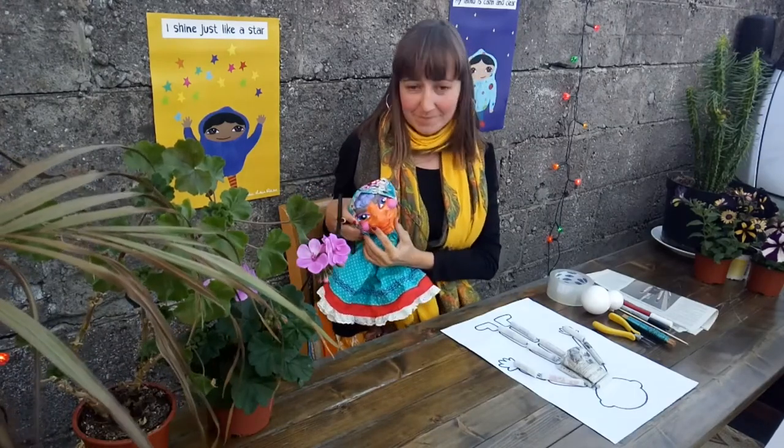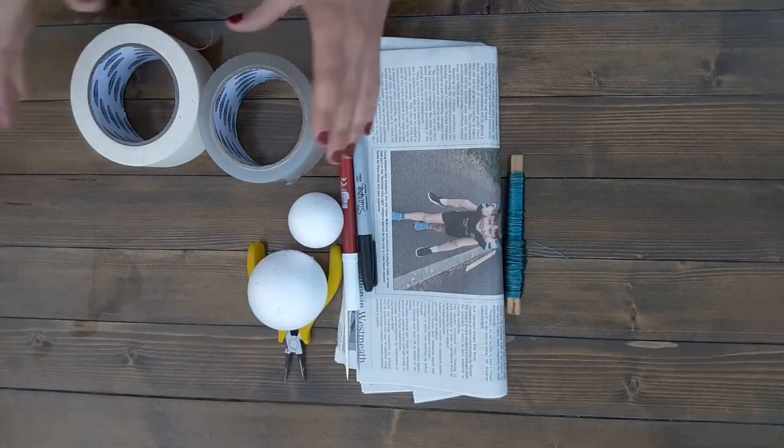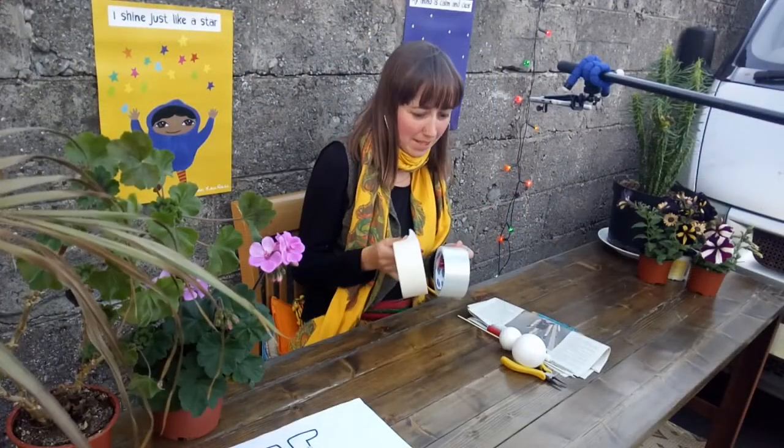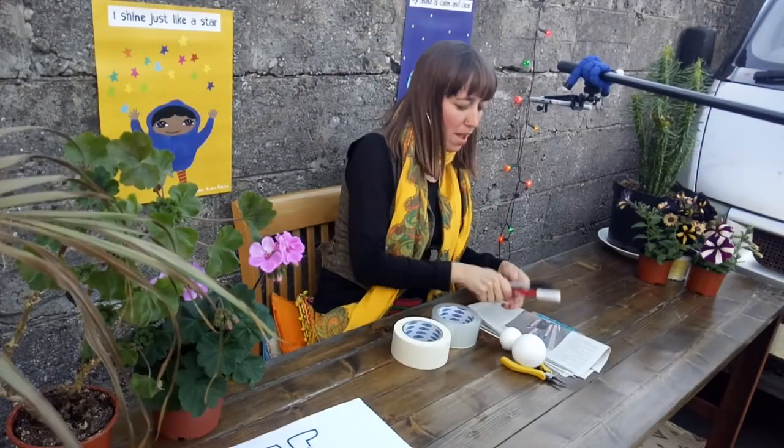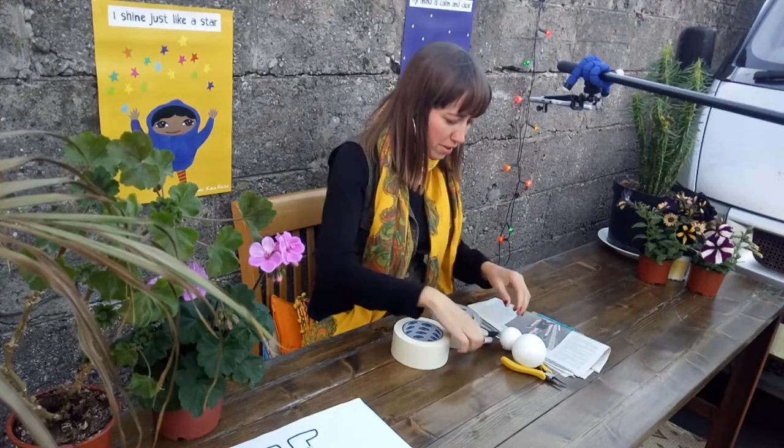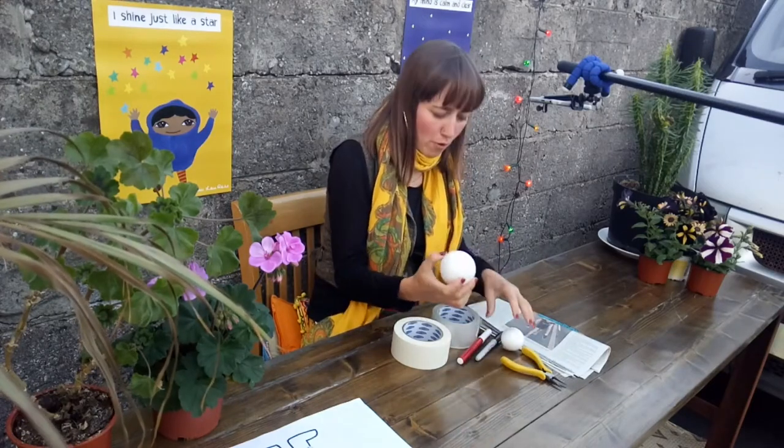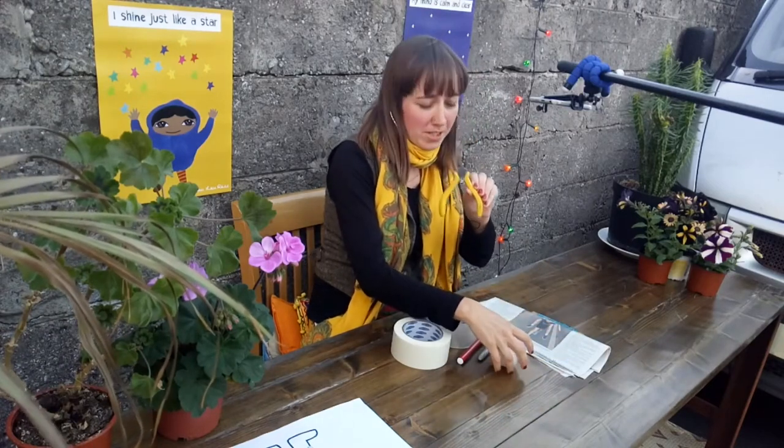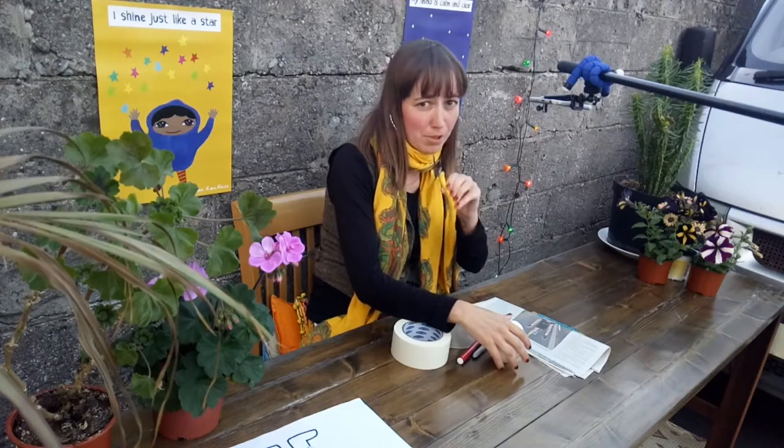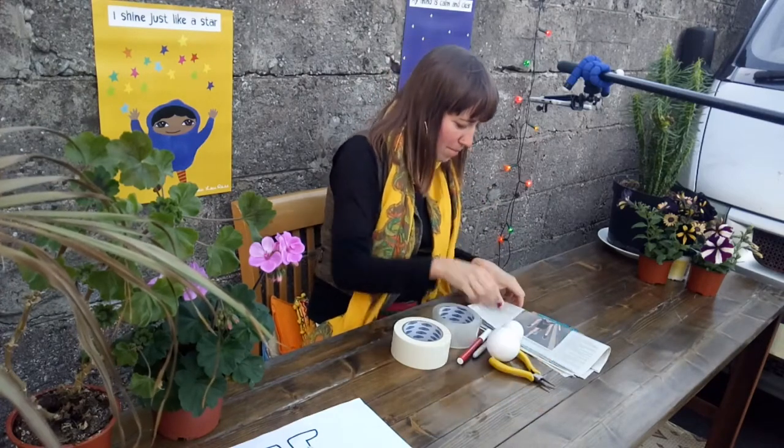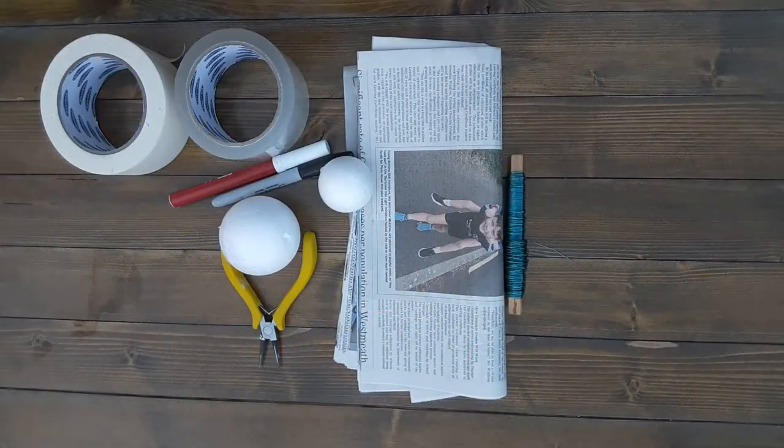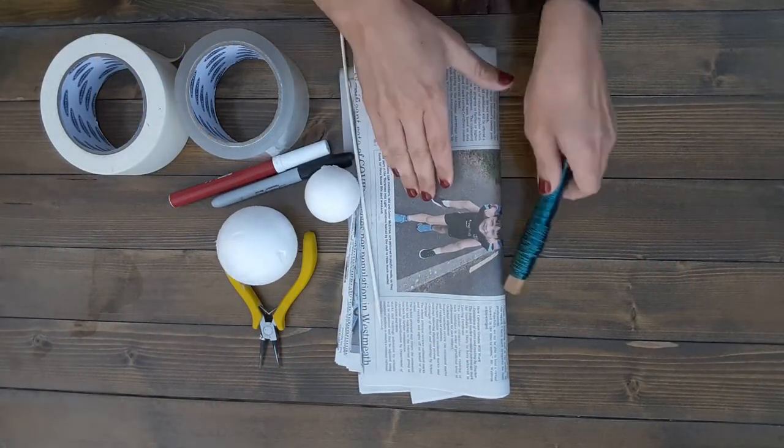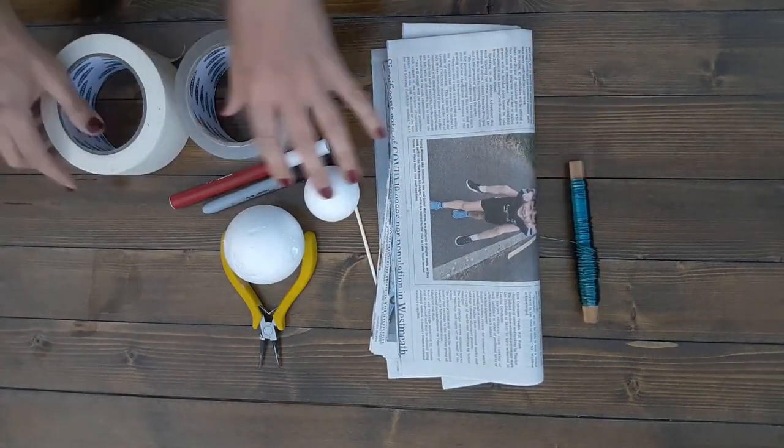Okay, so the materials that we need are really basic. We just need tape, sellotape, masking tape, two pens, two different color markers, and some styrofoam balls here for the head. A little tool for curling the wire, but it's not necessary—you can do it with your hands, but it's very handy. A skewer stick or a knitting needle, and some newspaper and wire.